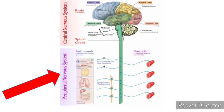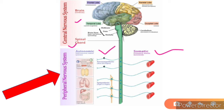Our nervous system is divided into two: central nervous system and peripheral nervous system. Our autonomic nervous system is a part of the peripheral nervous system. The central nervous system includes brain and spinal cord. The peripheral nervous system is divided into somatic and autonomic. Somatic mainly supplies the muscles and it is voluntary in nature, whereas our autonomic nervous system works below the conscious level — it is subconscious and involuntary in nature.